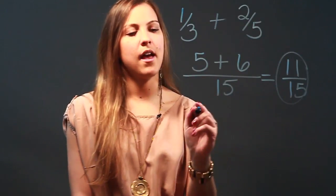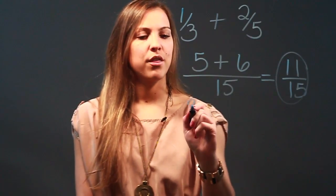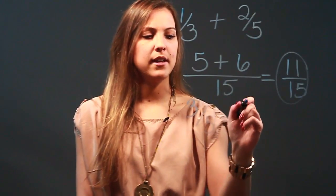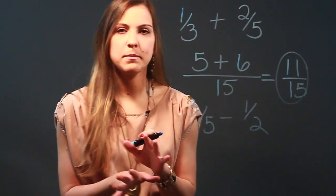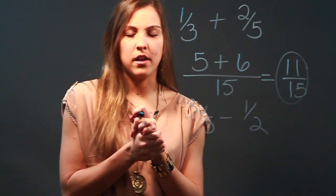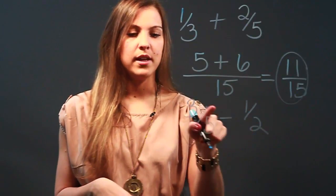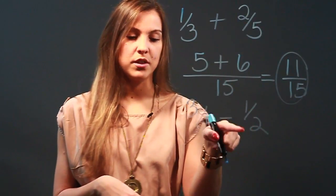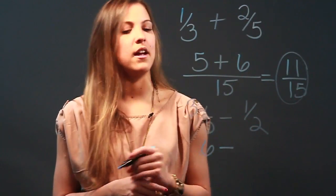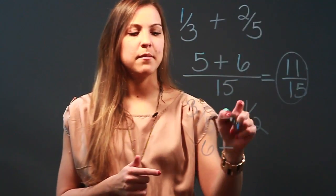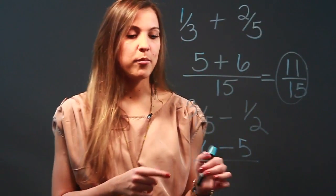By that same token, we'll do a subtraction problem. Let's say we had three-fifths minus one-half. I'm just going to cross multiply: two times three is six. Bring down your minus sign.